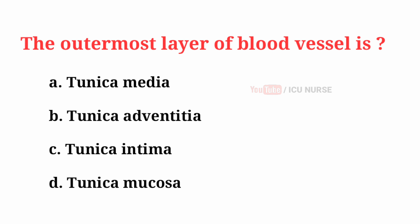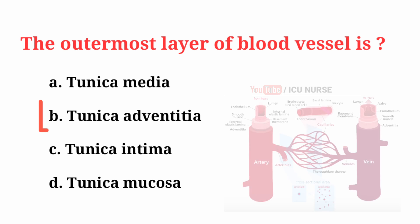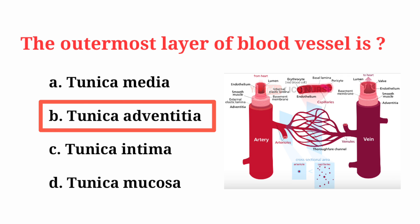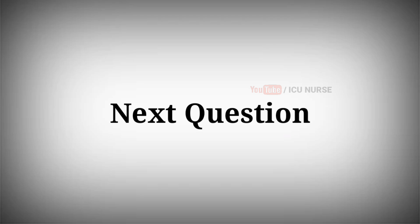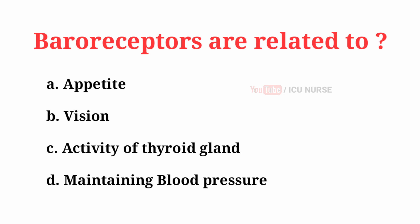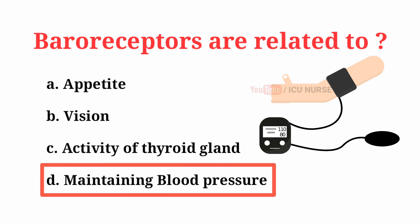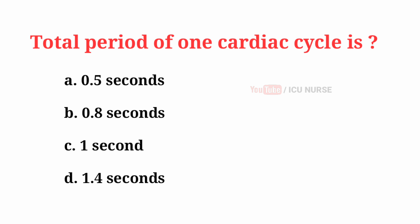The outermost layer of a blood vessel is? The correct answer is B: Tunica adventitia. Tunica adventitia is also known as Tunica externa.